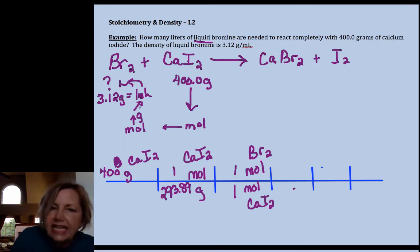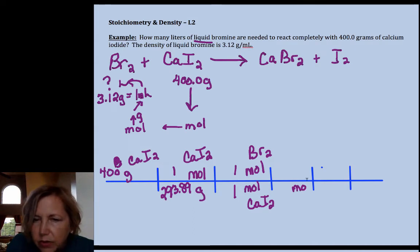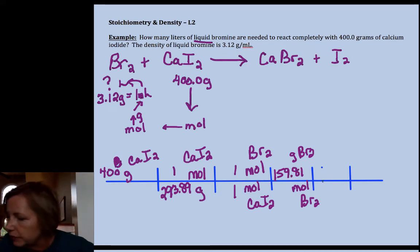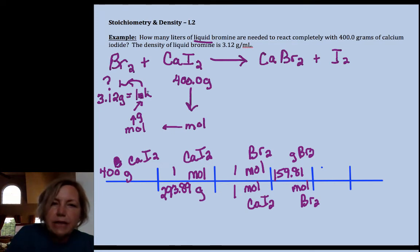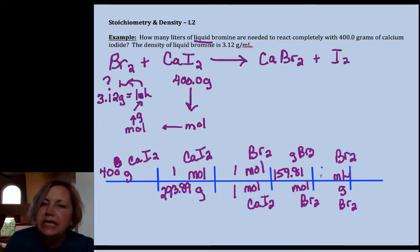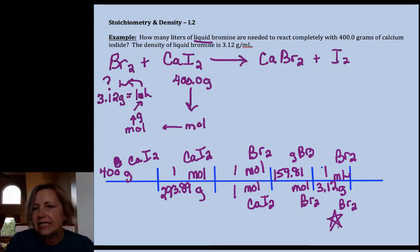Now I'm at moles. I can't get to volume, but I can get to grams. So I want to eliminate moles of bromine and go to grams of bromine. And don't forget it's diatomic. So you'll need to multiply that atomic mass by two to get 159.81 grams of bromine. I'm at grams. Now I can go to liters. I want to get rid of grams of bromine and go to milliliters of bromine. And my density tells me for every one milliliter, my sample would weigh 3.12 grams. Okay, so that's the key step there.